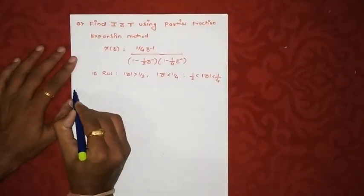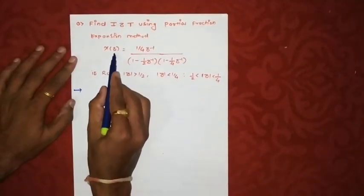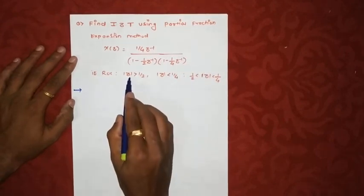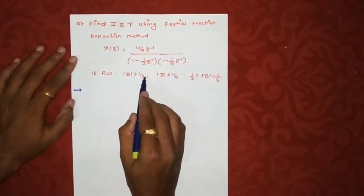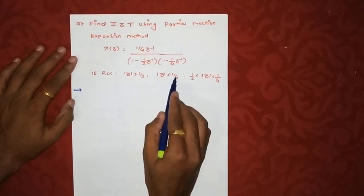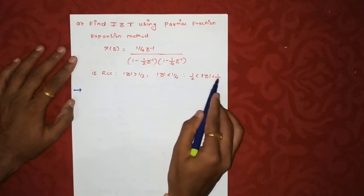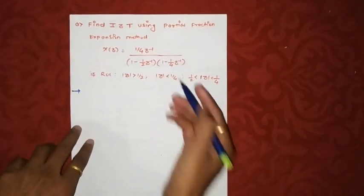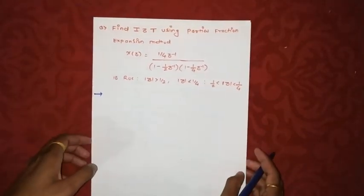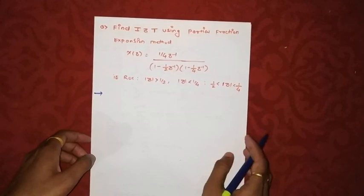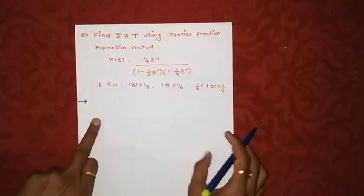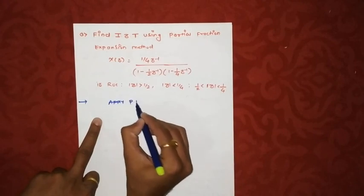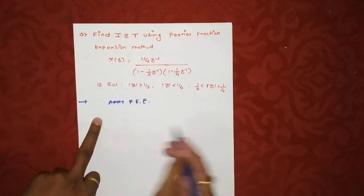In this question, they ask us to find the inverse Z-transform of X(z) with three conditions: first if ROC is greater than 1/2, second if it is less than 1/4, and third if it is in between 1/4 and 1/2. We first apply the partial fraction method and then find X(n).